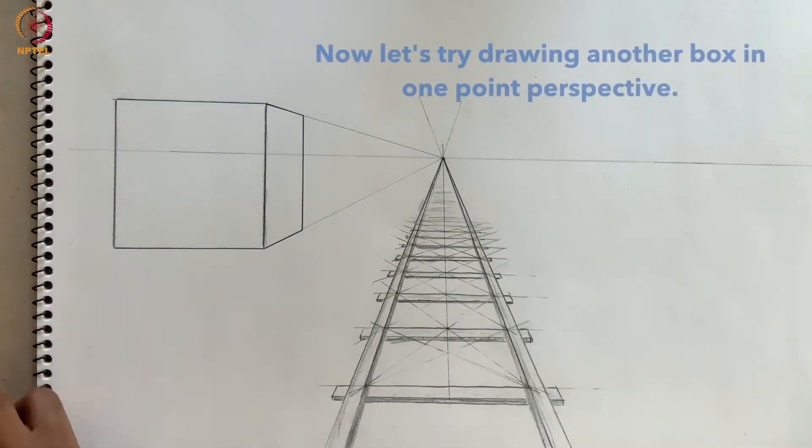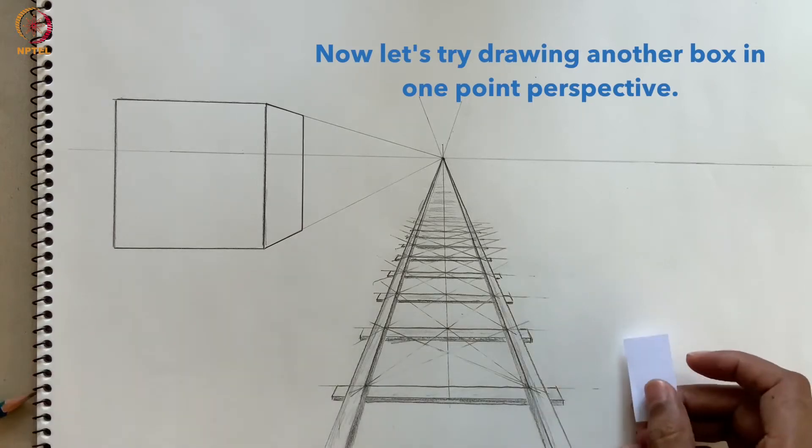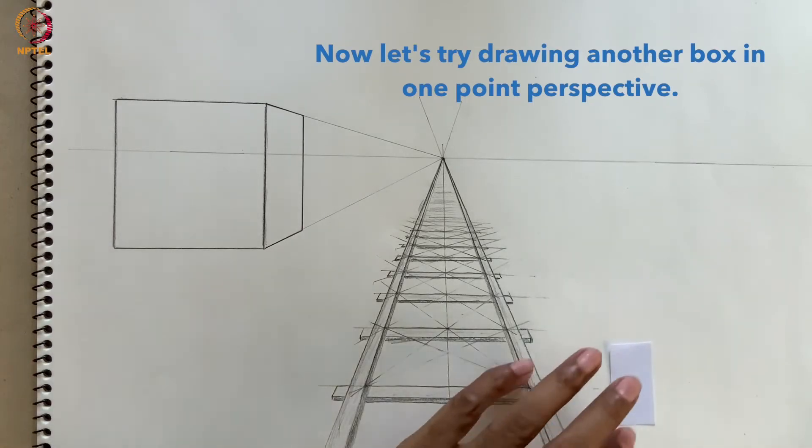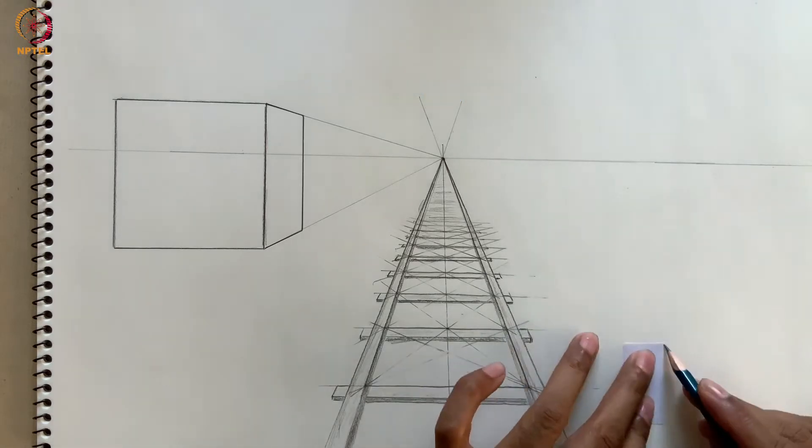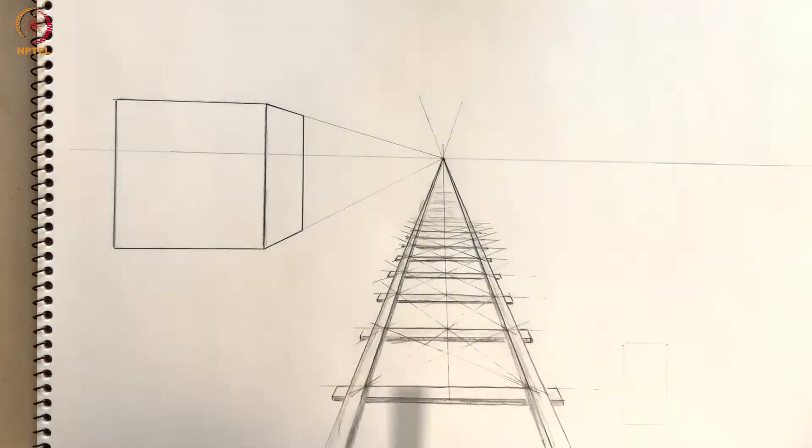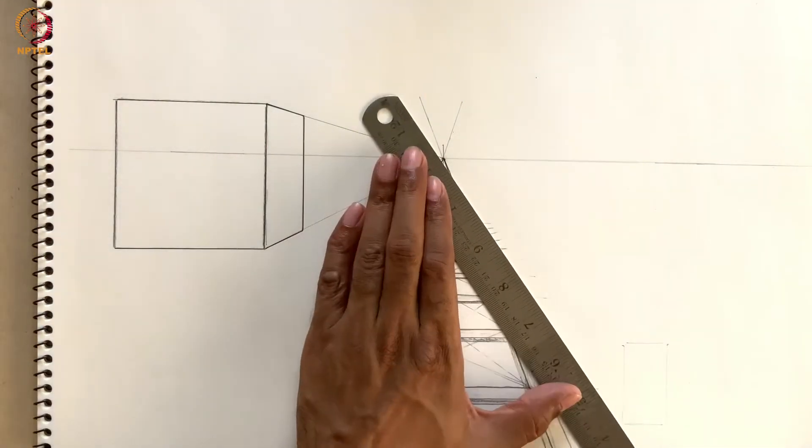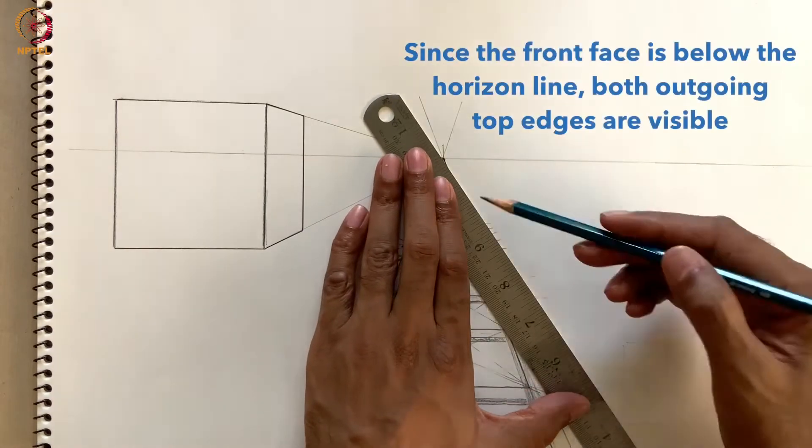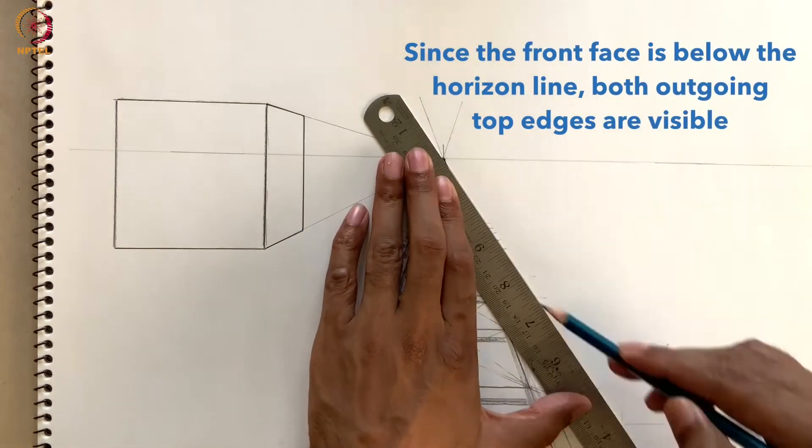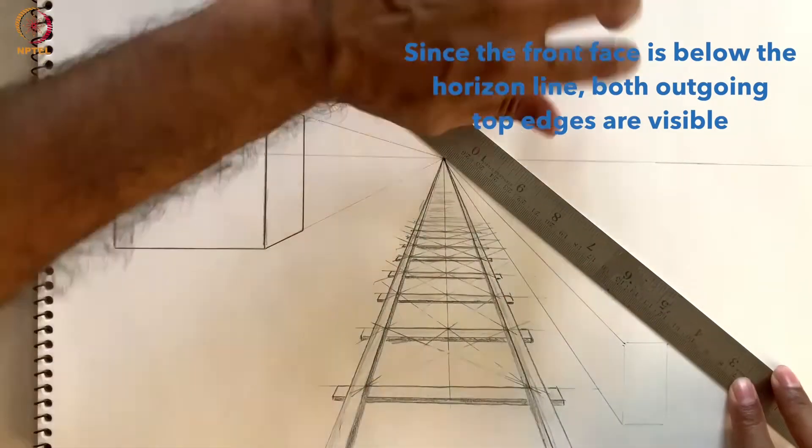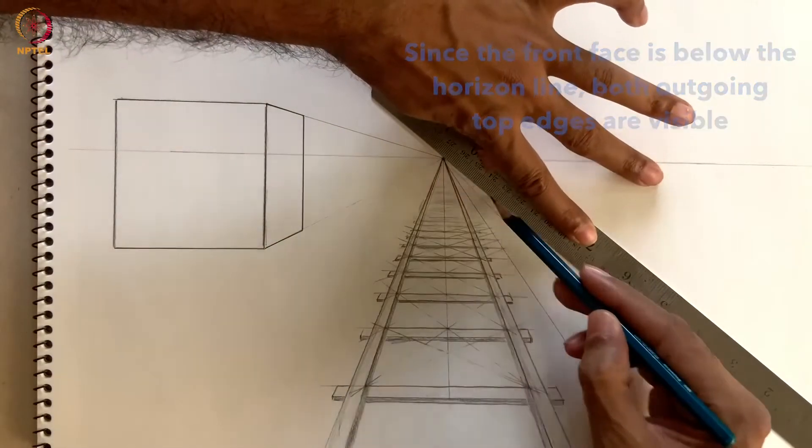Now let's try drawing another box in one-point perspective. We won't use a square face this time. Since we placed the front face of this box fully below the horizon line, there are three outgoing edges of the box that are visible.